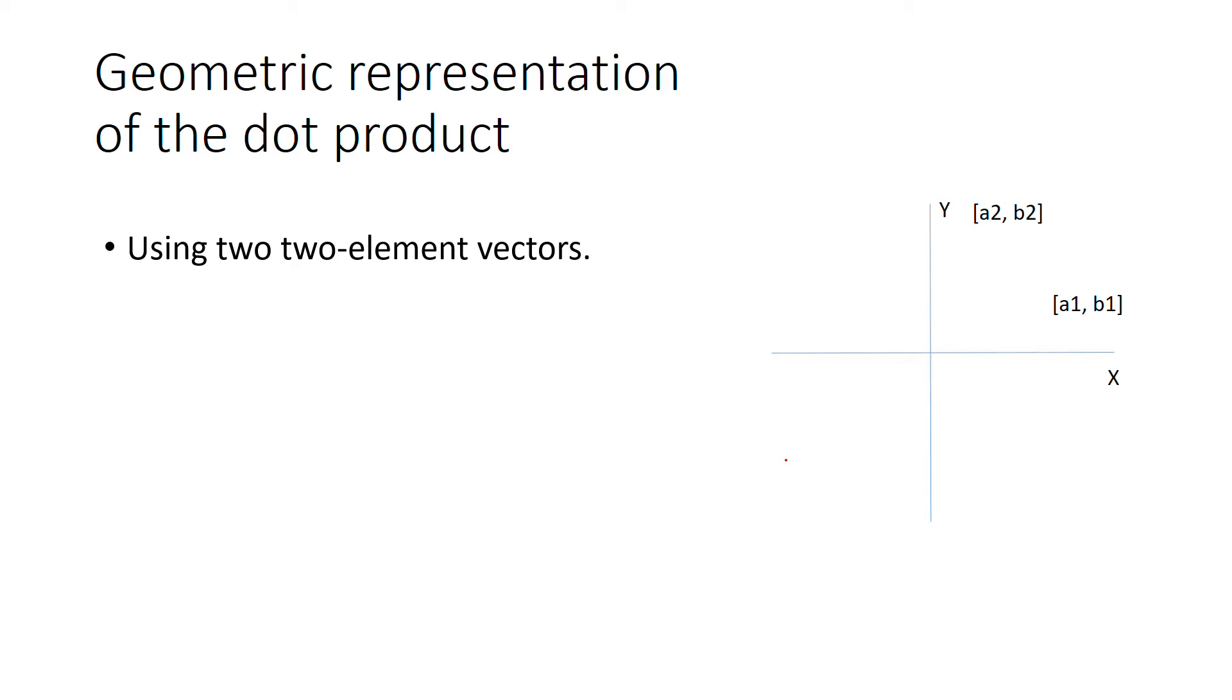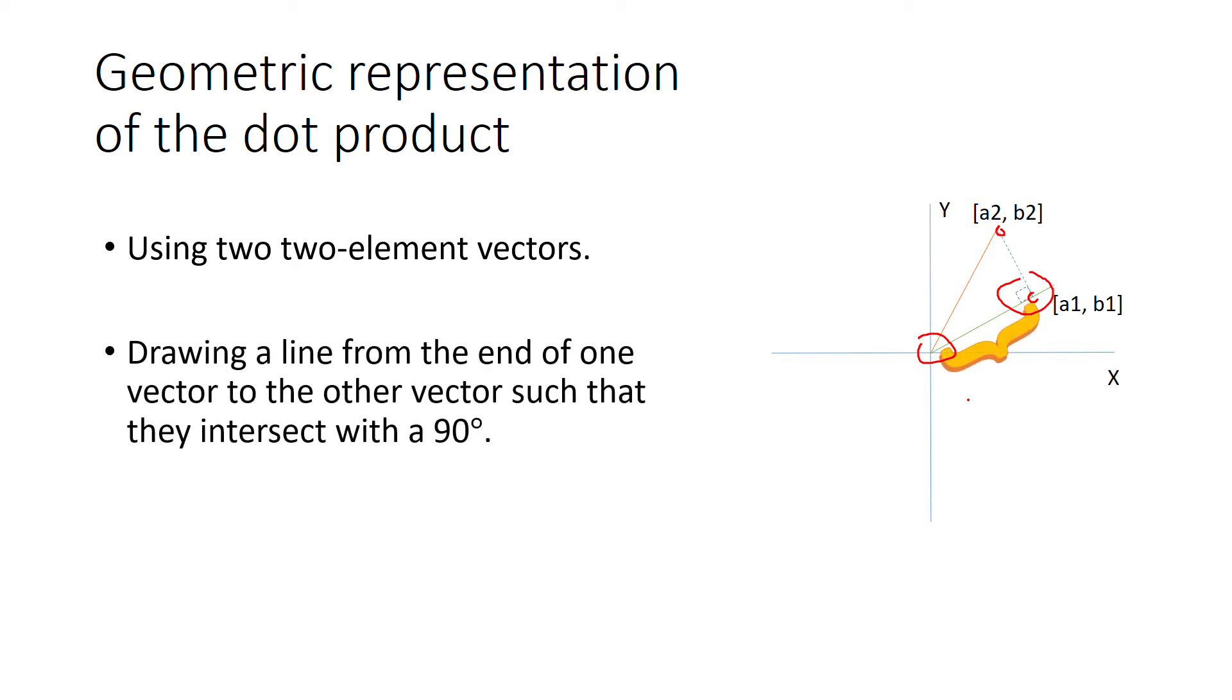Let's say a1b1 and a2b2. These vectors can be expressed as lines from the origin - this will be the origin, vector 2, and vector 1. Now imagine drawing a line from the end of one vector to the other vector such that they intersect with a 90-degree angle. The length of the projection onto the vector is the dot product.